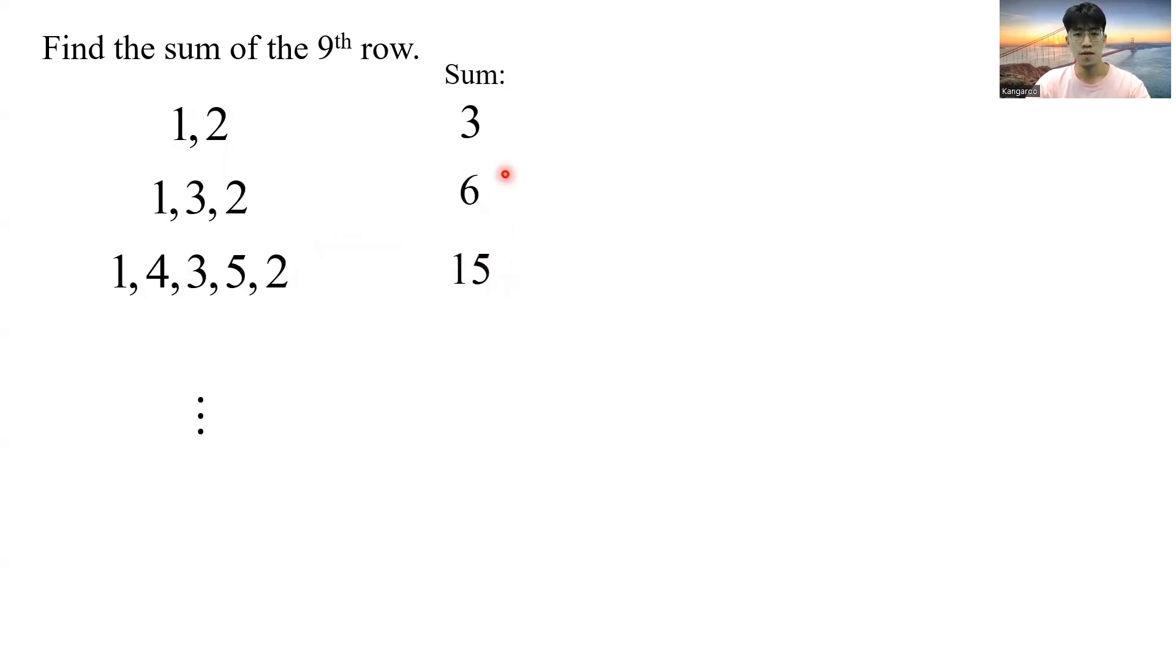To make it more obvious, let me write out all the difference between the sum. Now between 3 and 6, the difference is 3. And between 6 and 15, the difference is 9. And from here, you should notice that the difference is 3 to the power of 1, 3 to the power of 2. So the next value should be 15 plus 3 to the power of 3.